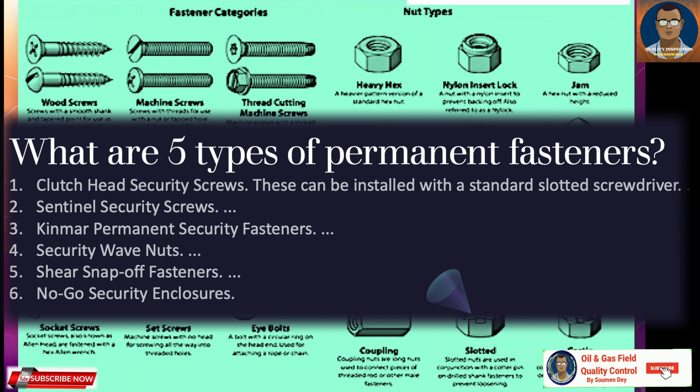What are five types of permanent fasteners? These include clutch head security screws that can be installed with a standard slotted screwdriver, Sentinel security screws, Kinmar permanent security fasteners, security web nuts, shear snap-off fasteners, and no-go security enclosures. These names we don't need to memorize, but we will discuss what we use widely for our industrial applications.